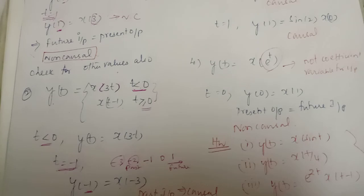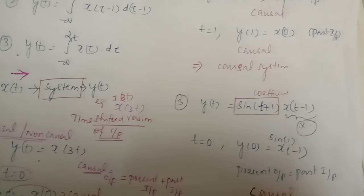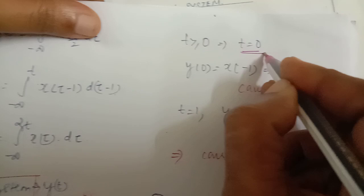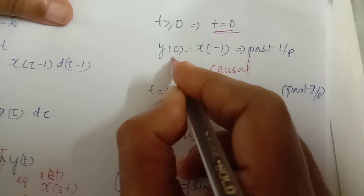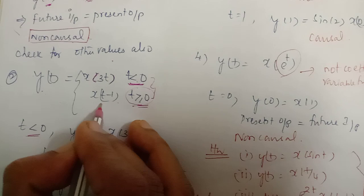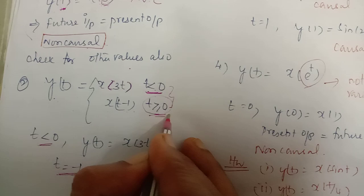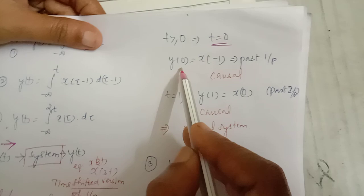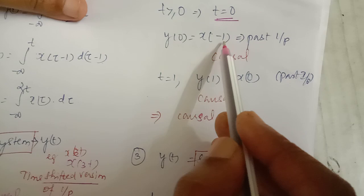Now for the interval t ≥ 0, we take t = 0. The expression here is y(t) = x(t - 1) for t ≥ 0. Substituting t = 0, we get y(0) = x(0 - 1) = x(-1).